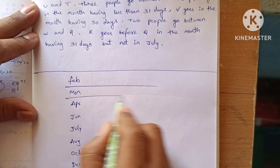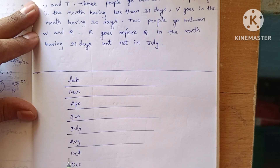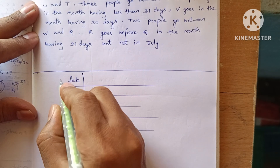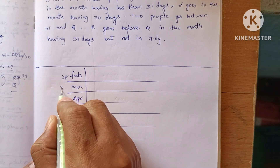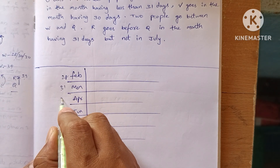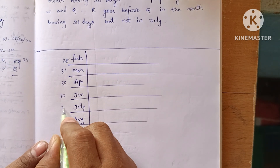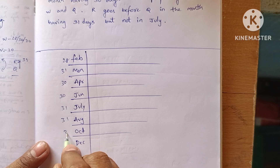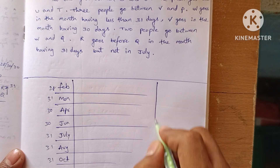We need to note the number of days in each month on the side. February has 28 days, March 31, April 30, June 30, July 31 days, and the remaining months also have 31 days. Let's note the clue statements on the side.